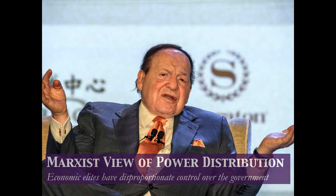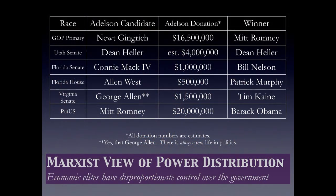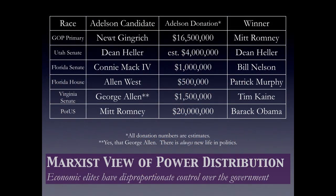That said, things did not go particularly well for Mr. Adelson. Most of his money went to backing losers. So that's the Marxist view of power distribution — the idea that money controls American politics. We see some evidence for it on a regular basis, but it's certainly not the end-all and be-all of determining political outcomes, and we're actually going to take a look at that in our Analyzing the Evidence activity coming up next week. Since it's not the silver bullet, let's take a look at some other views.